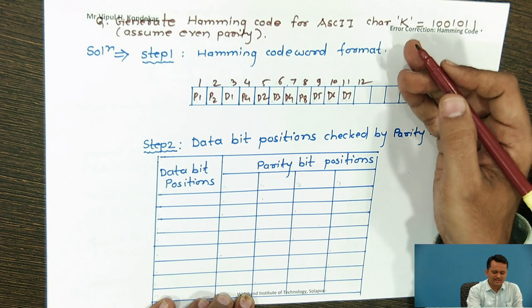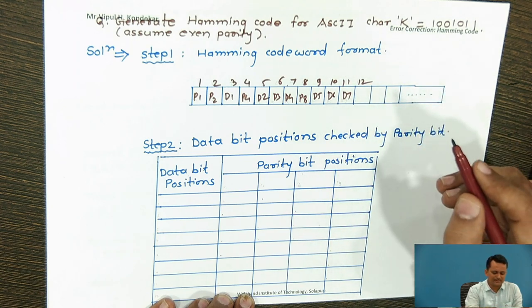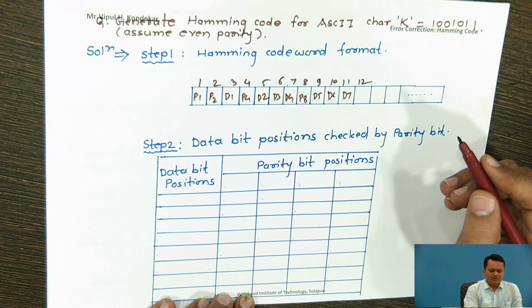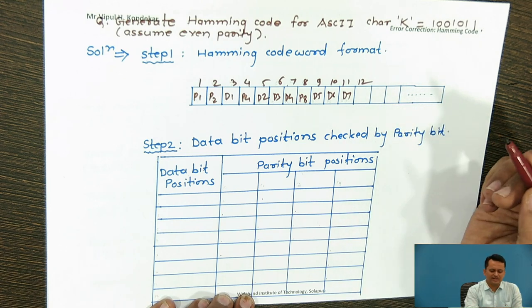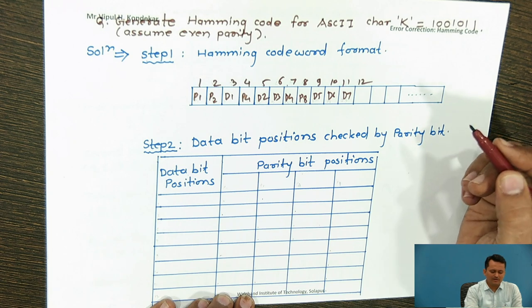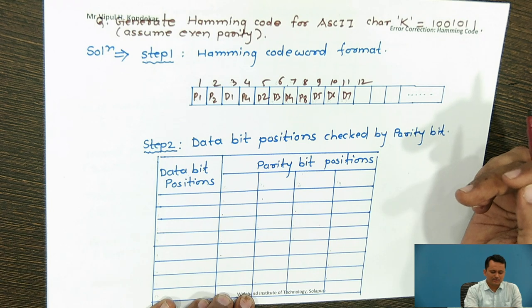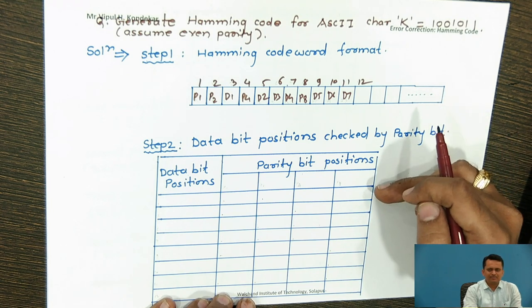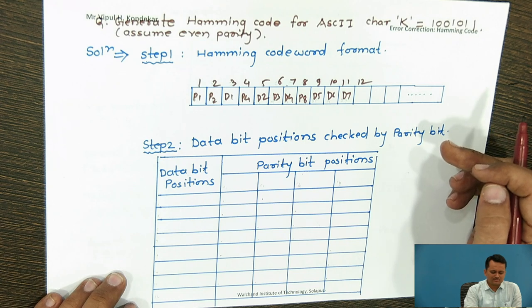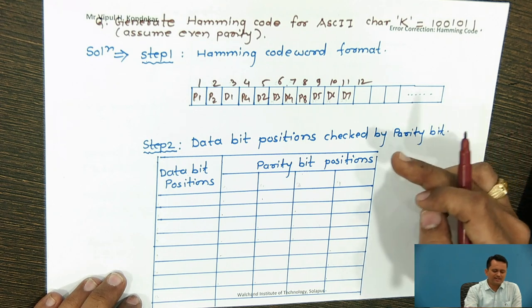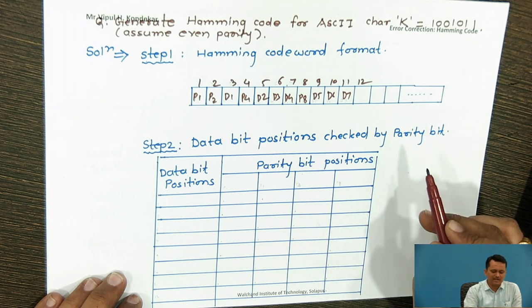Currently we have seven bits for ASCII characters, so we consider seven data bits, which can be extended if more are needed. This is the format for the Hamming code. Step two, which is common for all Hamming code generation, is to locate the data bit positions checked by each particular parity bit.